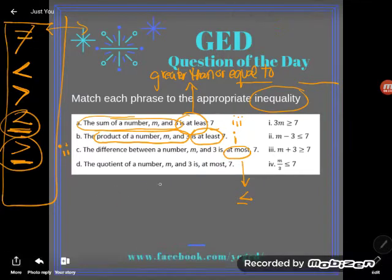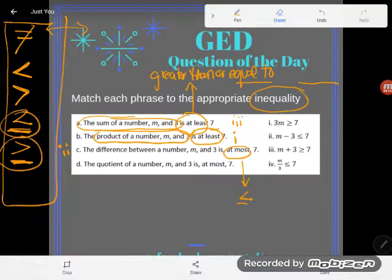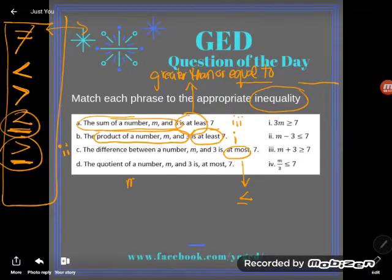Now, finally, let's look at D. D says the quotient of a number M and 3. By now we've ruled out the other operations. So I hope you realize that a quotient is an answer when you divide. So they want us to take M and divide by 3.